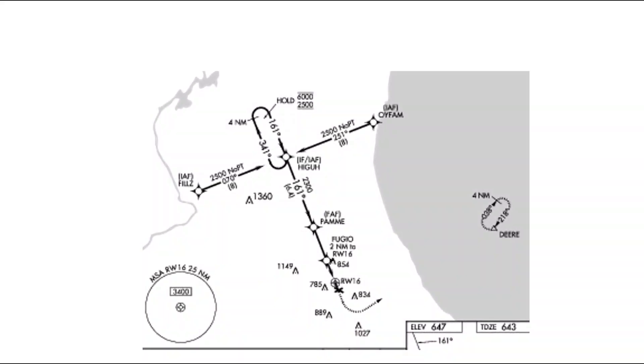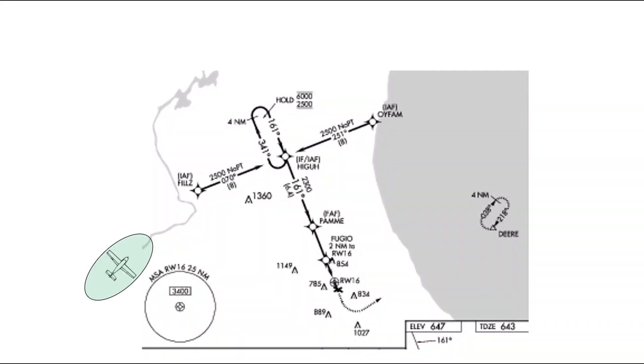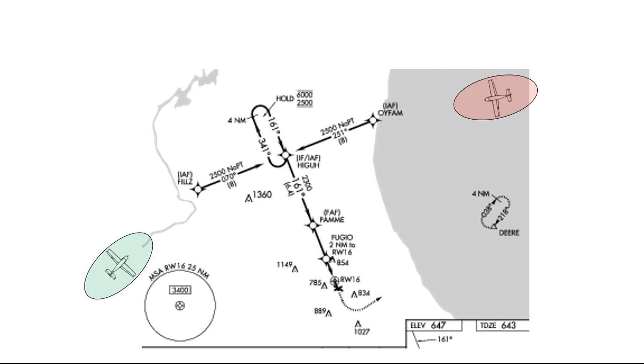[ATC Recording] 3-0 Delta, turn right direct to Philz, join the final. 3-0 Delta, descend and maintain 2,500. Yeah, we all got step down there. Number 237, Sierra Tango, maintain 3,000 direct away, fam. November 3-0 Delta, you're four miles from Philz, cross Philz to 3... I'm sorry, cross Philz that are above 2,500. Clear down and have rolling 1-6 approach. 3-0 Delta, you're brought forward speed all the way to PAMI.